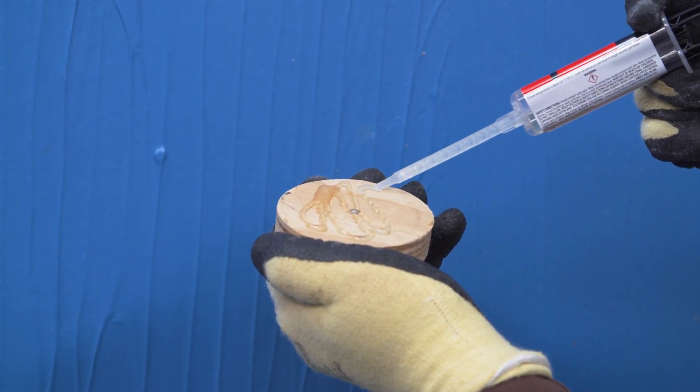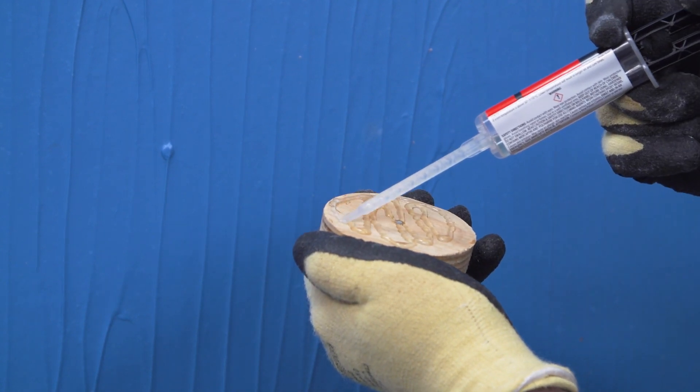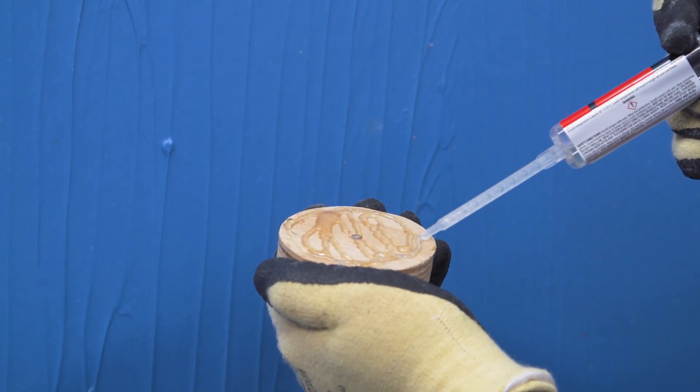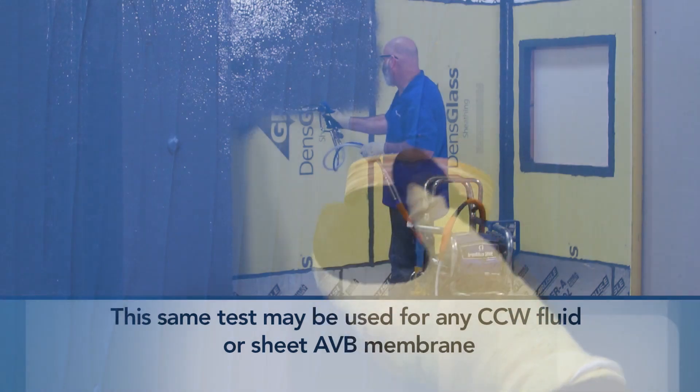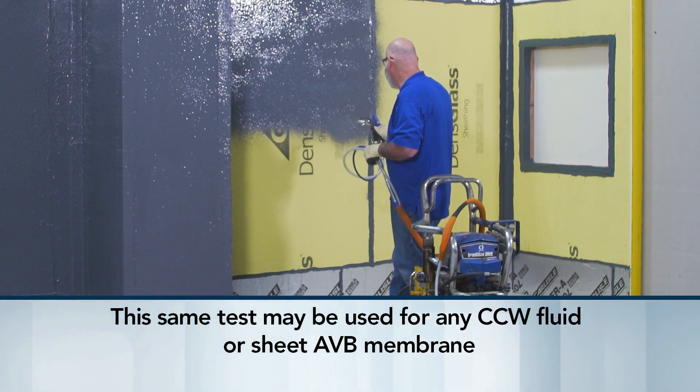In this demonstration, we will perform an adhesion pull test using FireResist Baratech VP, a CCW liquid-applied air and water resistive barrier. This same test may be used for any CCW fluid or sheet AVB membrane.